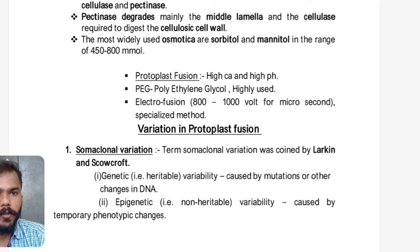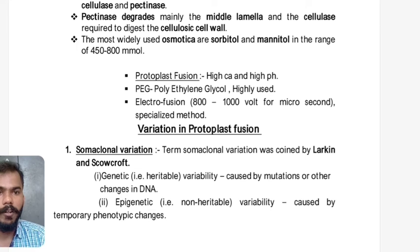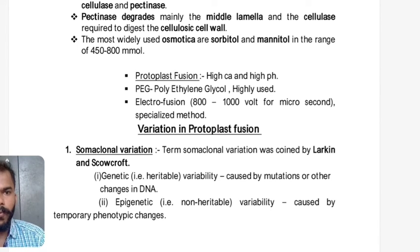Protoplast fusion requires high calcium and high pH conditions. The chemical used is polyethylene glycol (PEG). A specialized method of protoplast fusion is electrofusion, where 800 to 1000 volts of electricity is used for one microsecond.